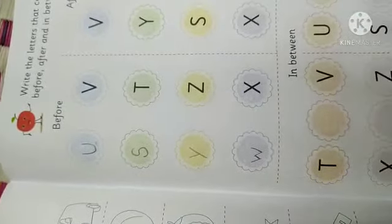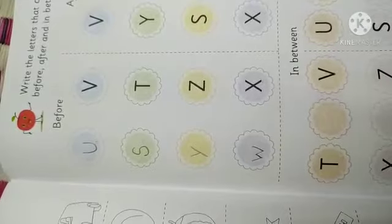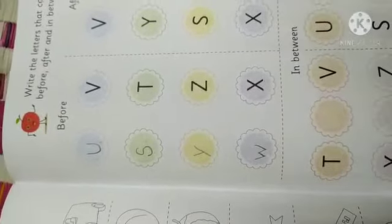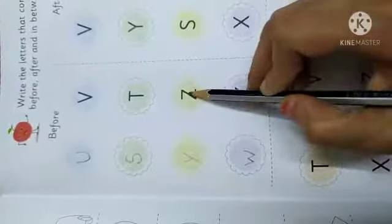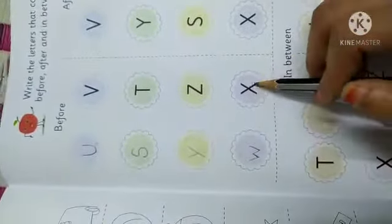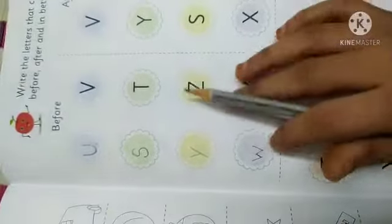So children, here we have seen the before letter. Yahaan peh, hum loog honnee dekha hai, before letter. See, V ke pehle U. T ke pehle S. Z ke pehle Y. X ke pehle W. Toh, yeh kya ho gaya? Before.